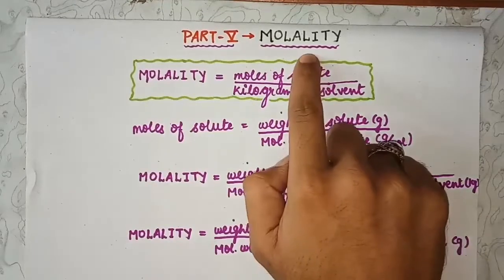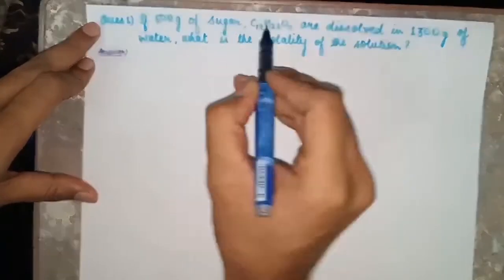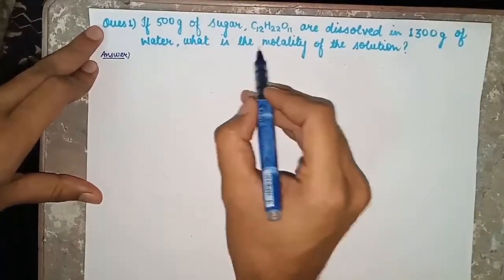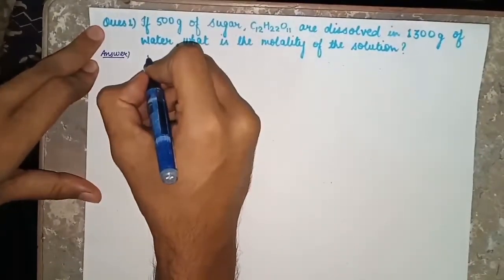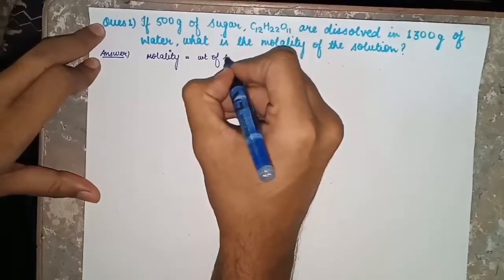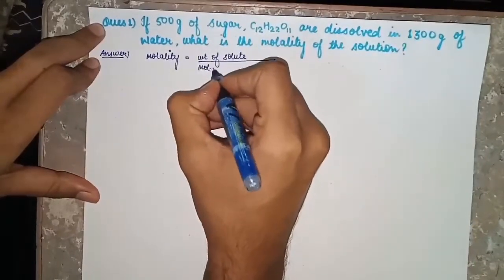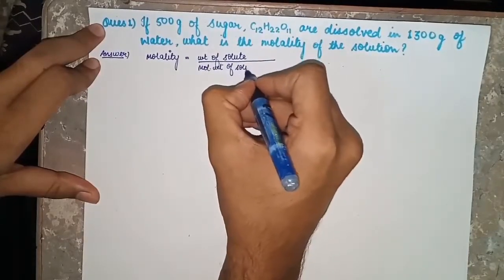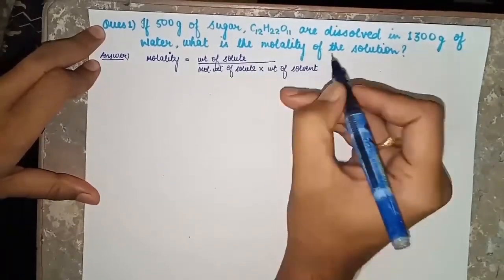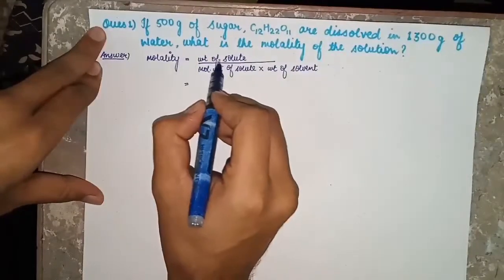Related to molality we will solve a few questions. The first question is: if 500 grams of sugar, that is C₁₂H₂₂O₁₁, are dissolved in 1300 grams of water, what is the molality of the solution? It can be solved as: we know that molality is equal to weight of solute divided by molecular weight of solute, multiplied by weight of solvent.